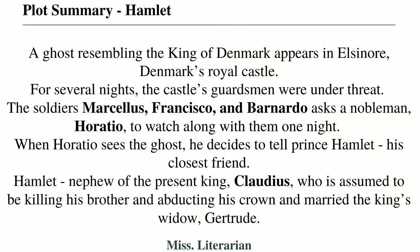As the play starts, a ghost resembling the deceased king of Denmark appears in front of Denmark's royal castle. The castle's guardsmen were also observing the ghost's appearance. The soldiers Marcellus, Francisco, and Bernardo are terrified observing the ghost. Horatio, the closest friend of Hamlet, also witnesses the ghost, and at once he decides to tell Prince Hamlet.